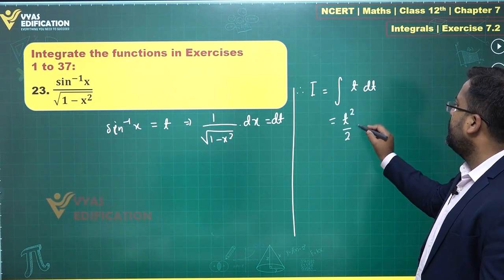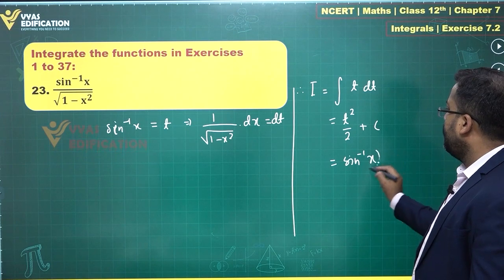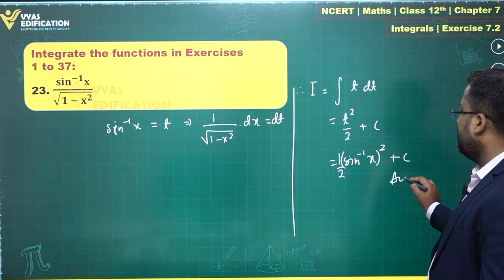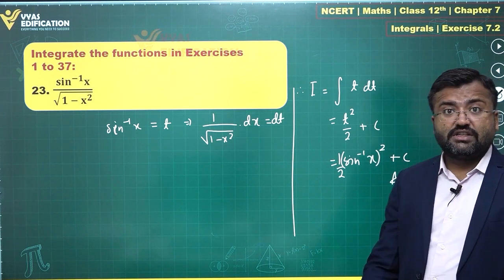So that becomes t square by 2 plus constant, which is sine inverse x whole square by 2 plus constant is my answer. This is what you have. That is the final answer for this 23rd question as you can see over here.